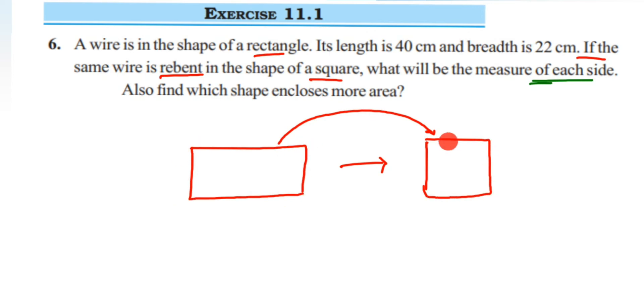Because the same wire is used, the perimeter of both the shapes will be same. So we're going to use this relation to find out the answer, that is the side of the square.